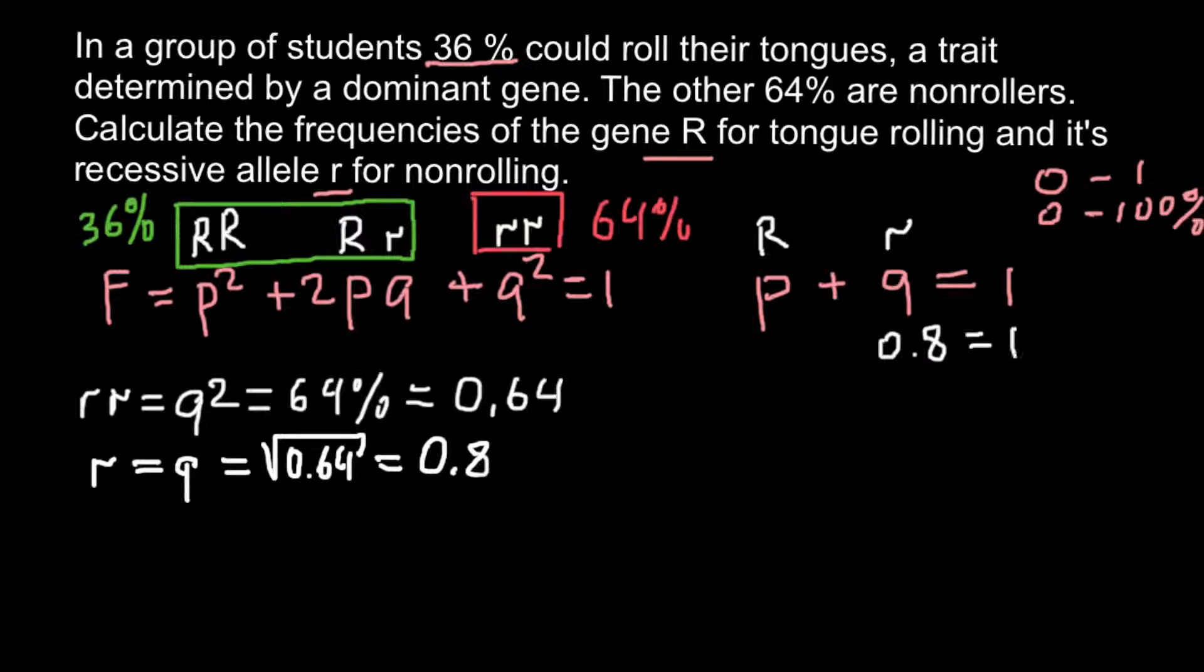This is a very simple calculation. We instantly know that the frequency of the dominant allele R would equal 0.2. When we add these two numbers, we get one.